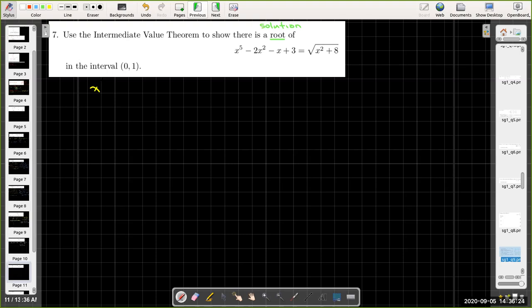So I'm going to actually look at x to the fifth minus 2x squared minus x plus 3 minus radical x squared plus 8 equals 0.